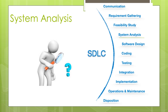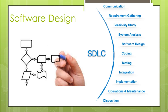The project team analyzes the scope of the project and plans the schedule and resources accordingly. The next step is software design — bringing down the whole knowledge of requirements and analysis to design the software product.